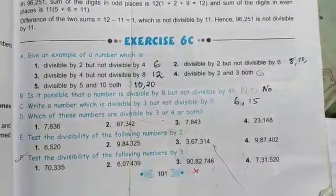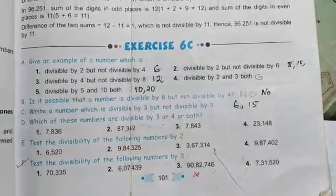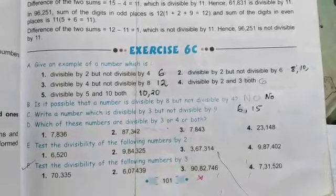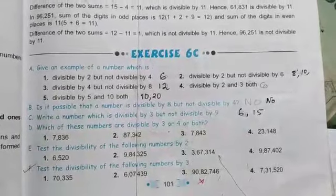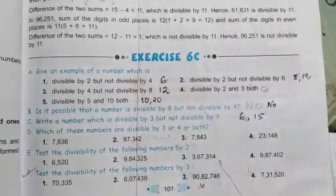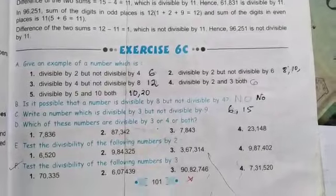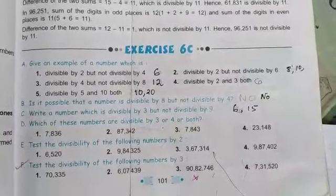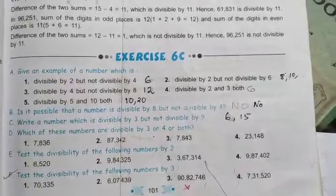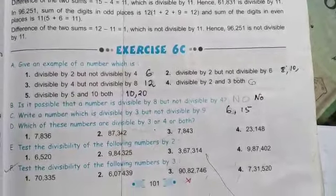The first question asks for a number divisible by two but not divisible by four. The rule for divisible by two is that the last digit should be even. For the example, I have written six — you can write ten also, many numbers are there. Six is divisible by two but not by four.